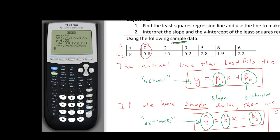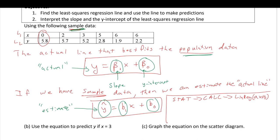Using those results, the equation that best fits our data — written with y-hat because this is sample data and is an estimate — is: y-hat = −0.71x + 6.55. That is our best estimate of the line that fits this data.